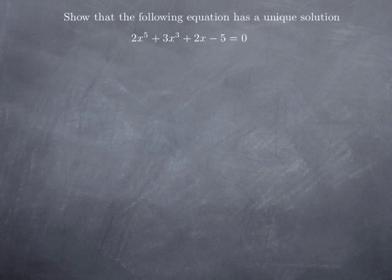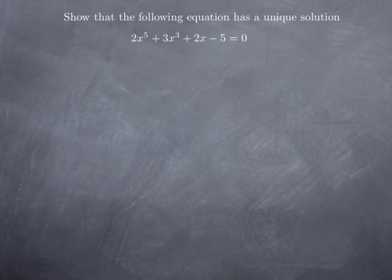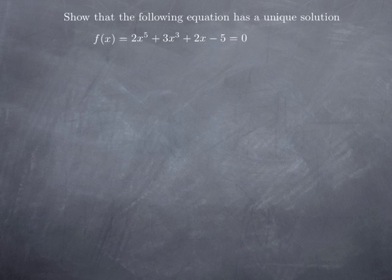So let's see how these kinds of observations can be applied. Let's say that we want to show that the equation 2x⁵ + 3x³ + 2x − 5 = 0 has a unique solution. There are two parts in this statement: that the equation has a solution and that this solution is unique. Let's call the function f(x) = 2x⁵ + 3x³ + 2x − 5, so the equation has the form f(x) = 0.